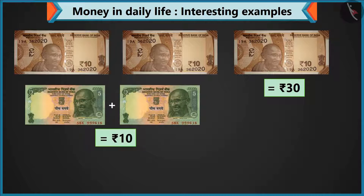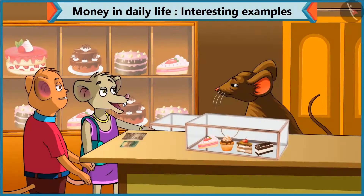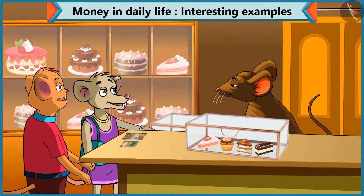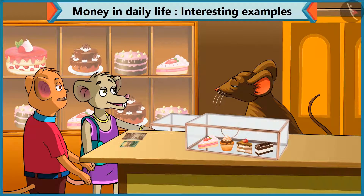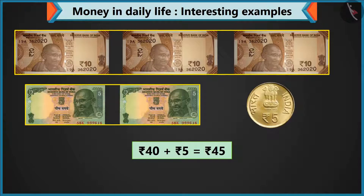Yes, 40 rupees on adding 30 and 10. But this pastry is worth 45 rupees. Yes, Chi Chi, we have to add 5 rupees to this 40 rupees. But I had only 2 notes of 5 rupees. Chi Chi, you have coins, right? Yes. Take a coin of 5. So now 40 and 5 makes 45 rupees.